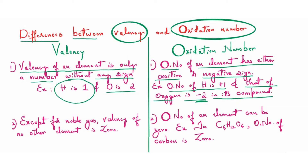The second difference between valency and oxidation number is that, except for noble gases, valency of no other element is zero. Noble gases are the gases which do not have any tendency to combine — they are always noble. Their electronic configuration has ns² np⁶, and that is why we say valency of no other element will be zero except for noble gases.